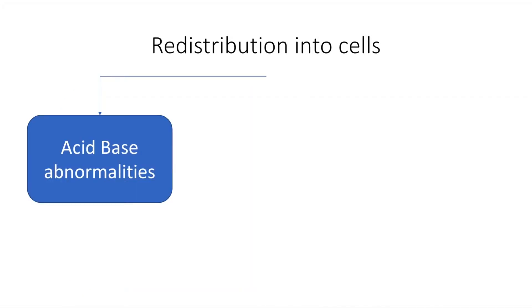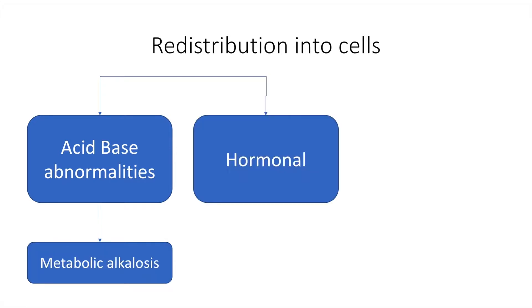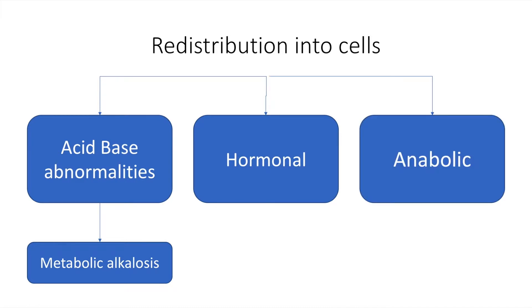The most common cause of redistribution into the cell is an acid-base abnormality, most commonly metabolic alkalosis. Also possible are hormones and drugs, as we will see in a moment, and finally anabolic redistribution.